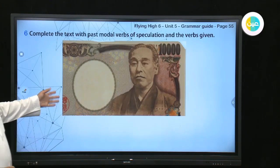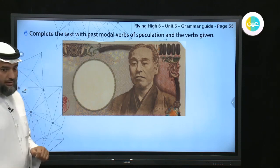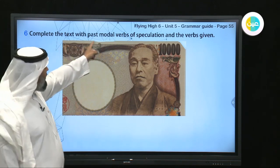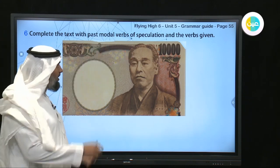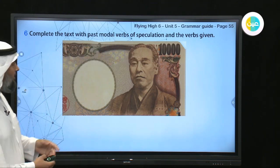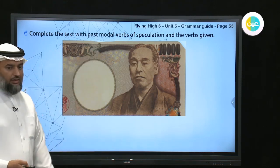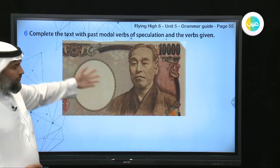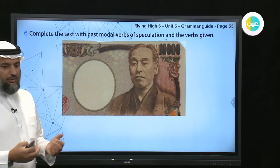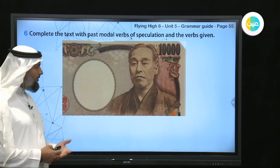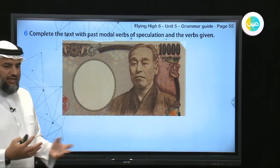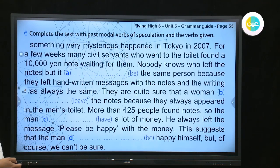Now, if you look at this 10,000 yen note — it's from Japan. Complete the texts using past modal verbs of speculation with 'have' and the verb given. They give you a verb and an article to complete. This note is from Japan, so the story happened in Japan and it has something to do with money.